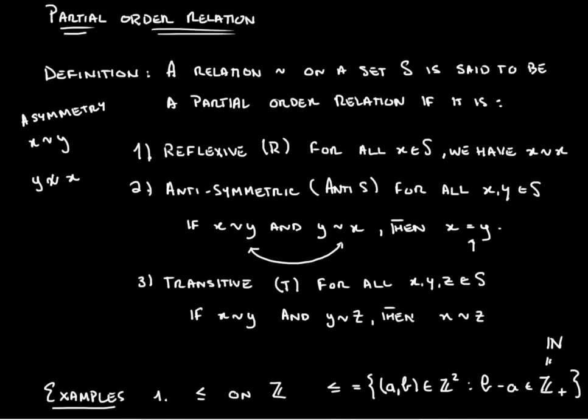Now remember, a partial order relation is reflexive. It is anti-symmetric. Antisymmetry is not the same thing as asymmetry and partial orders are also transitive.